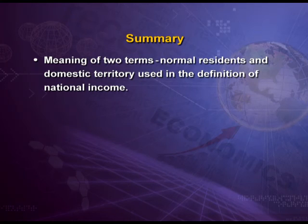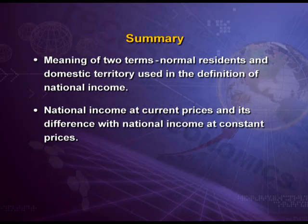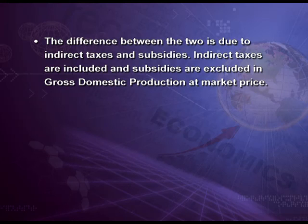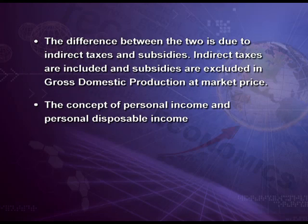So students, with this discussion of per capita income we stop here. Let us revise what we have done today. We started with the meaning of two terms: normal residence and domestic territory used in the definition of national income. Then we covered national income at current price and its difference with national income at constant price. Then, gross domestic production at factor cost and at market price — the difference being indirect taxes and subsidies. Then the concept of personal income and personal disposable income, and finally per capita income. The methods of measuring national income will be discussed in the next lecture. Thank you.